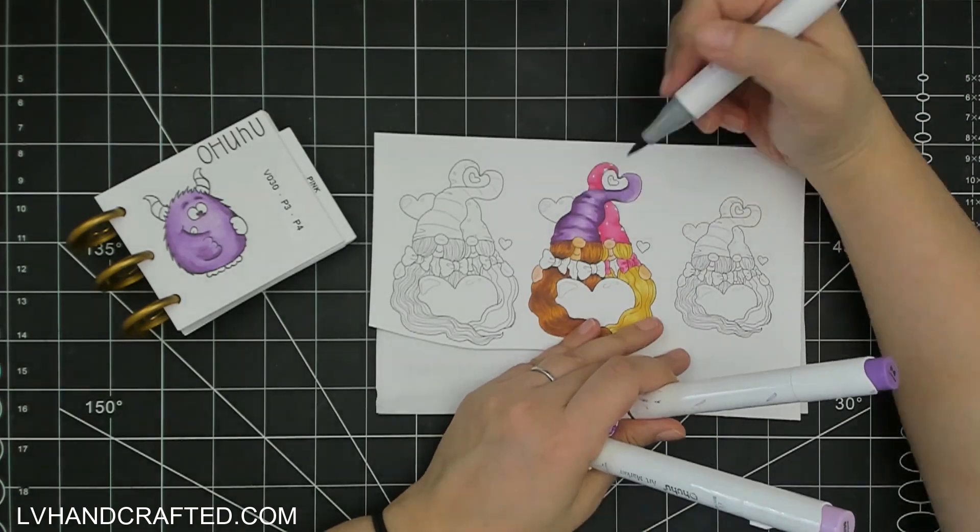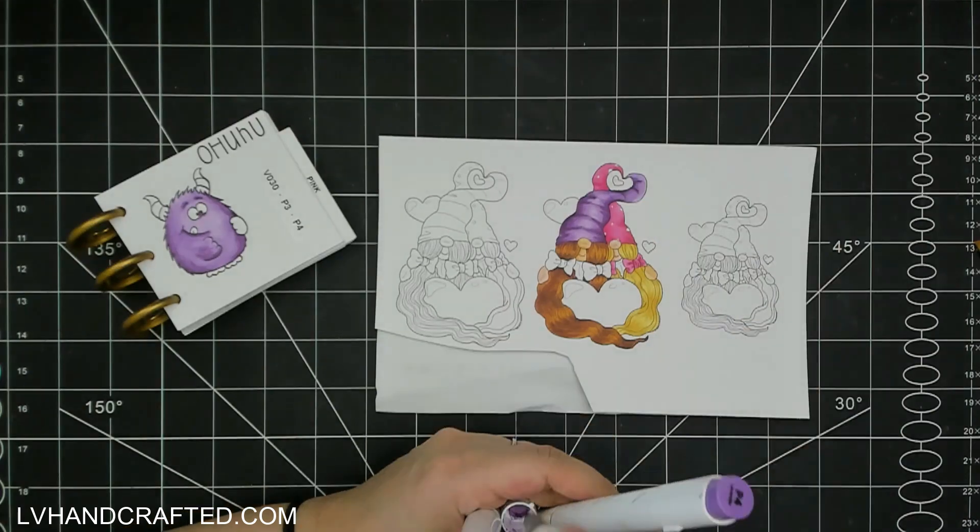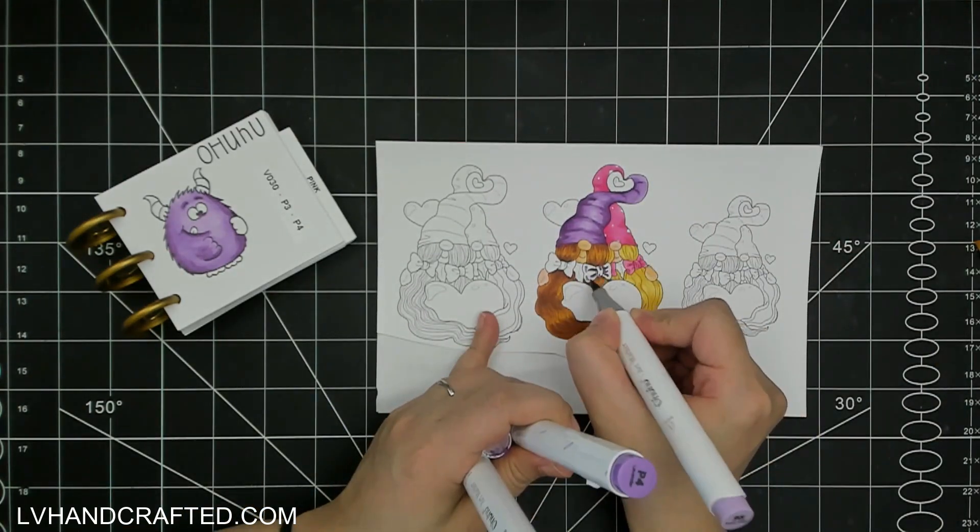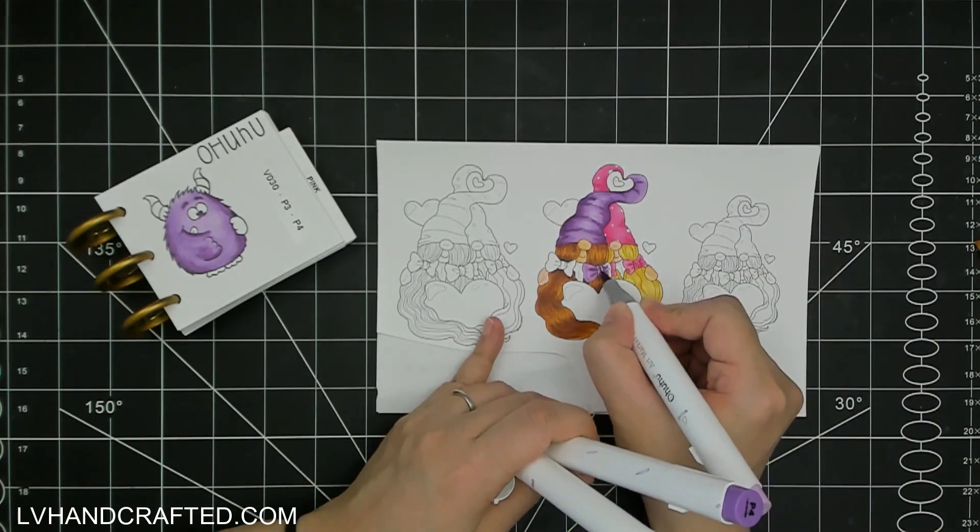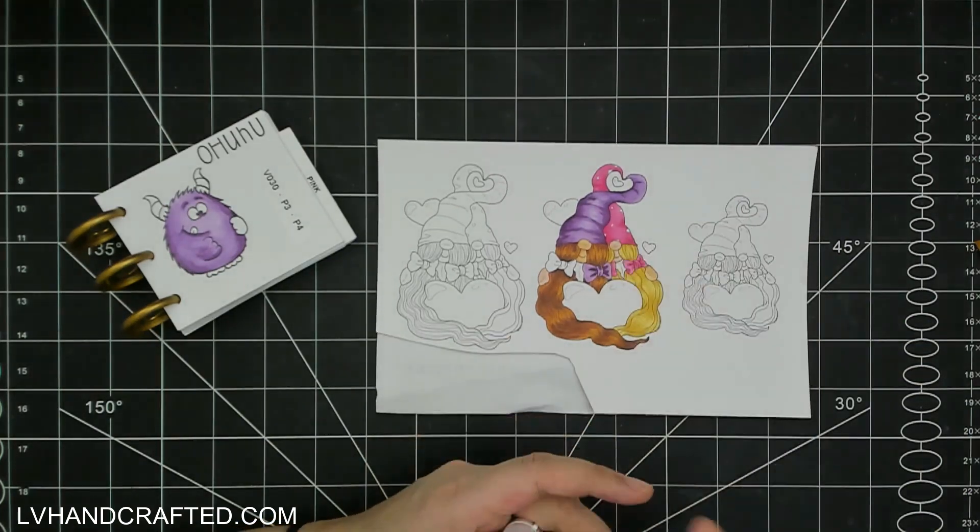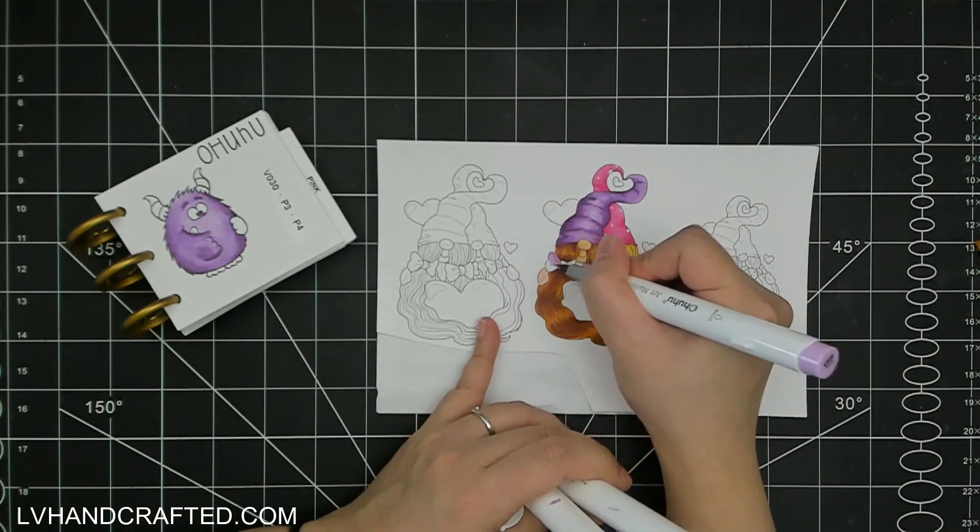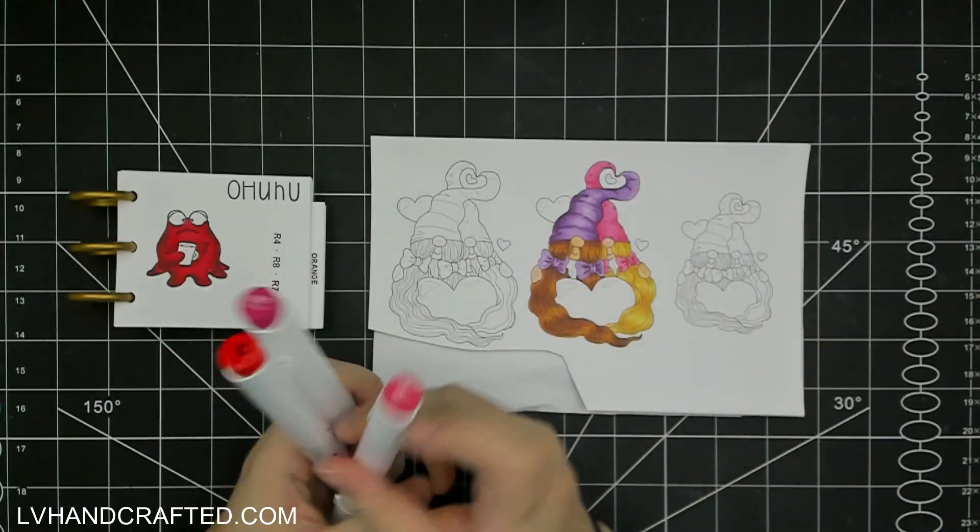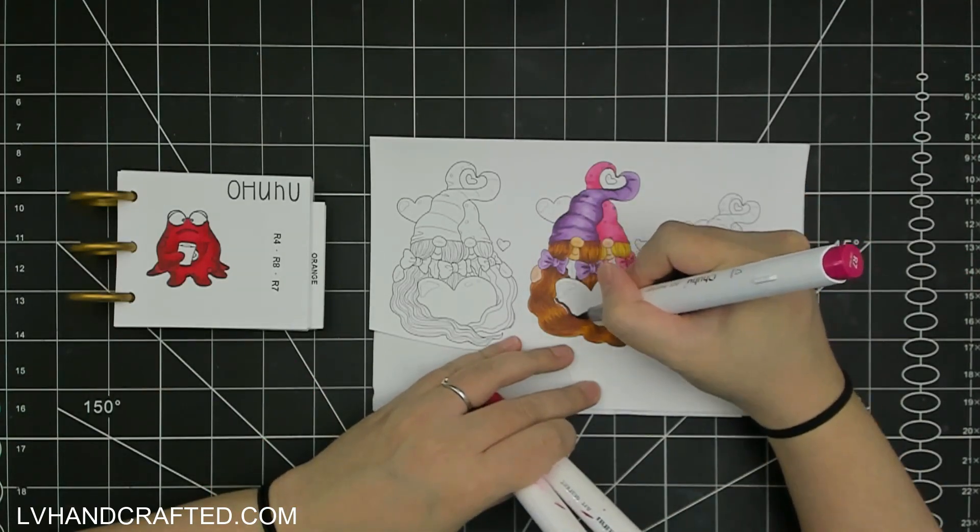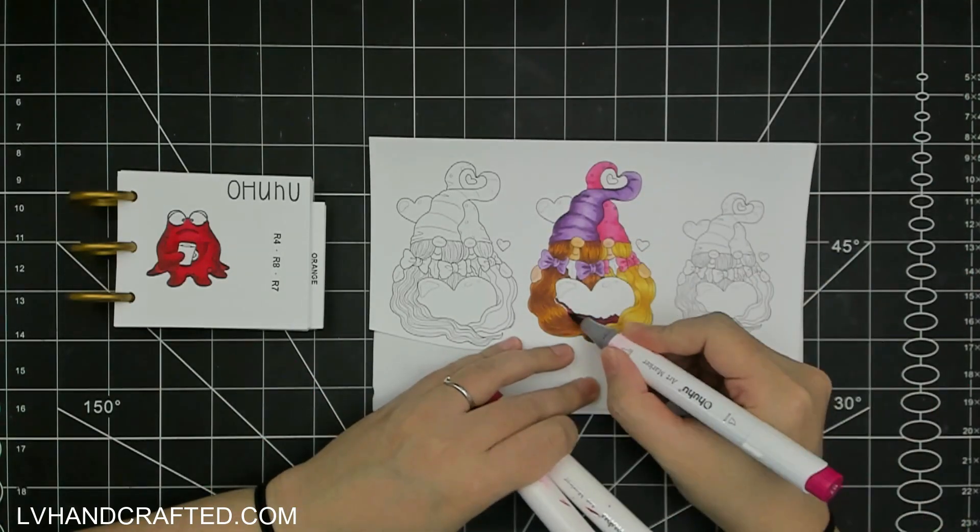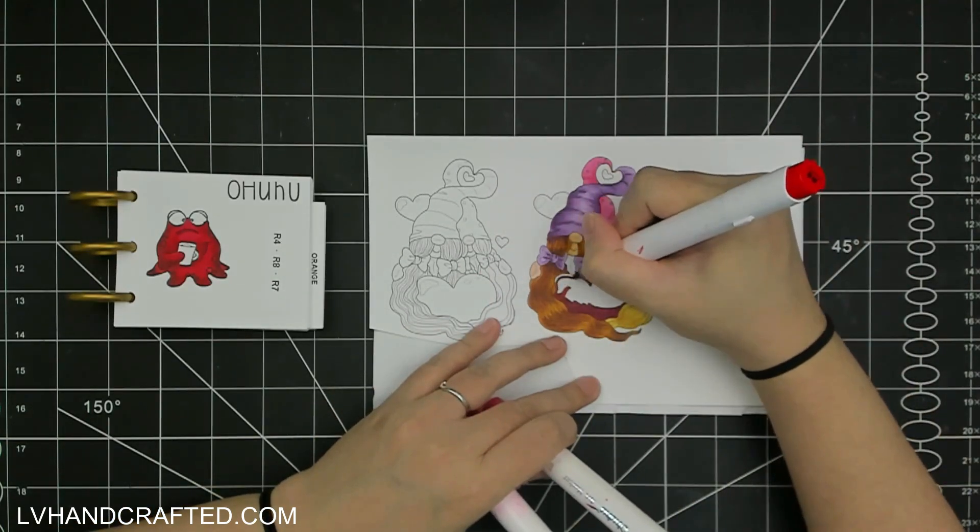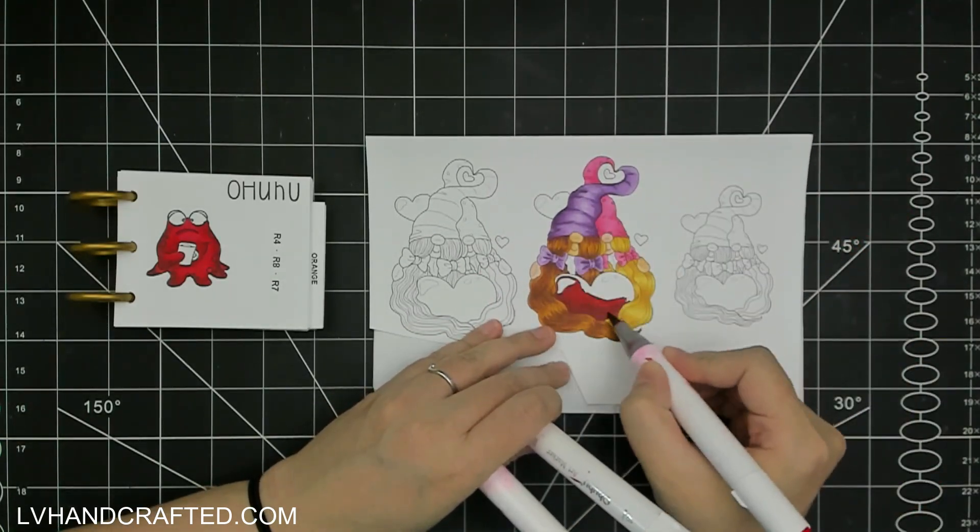The other reason to go over with a second or third pass is once your alcohol marker coloring dries, you'll also notice that it lightens up. So you always want to just re-evaluate how things look after it dries. It doesn't take long, but after the ink has had a chance to dry, you can make the determination if you feel like you need to darken some areas.